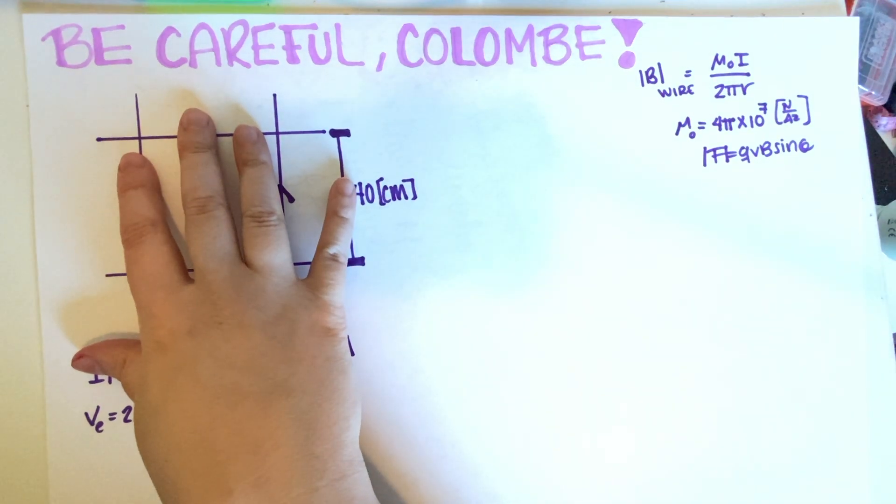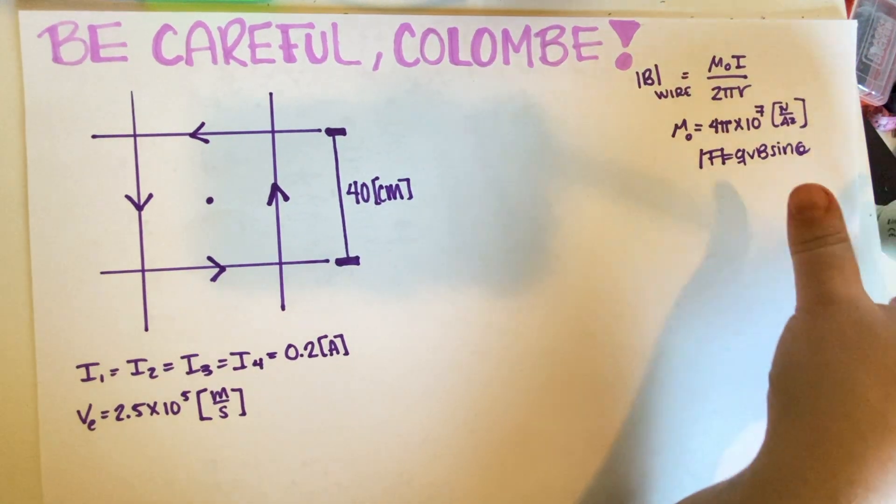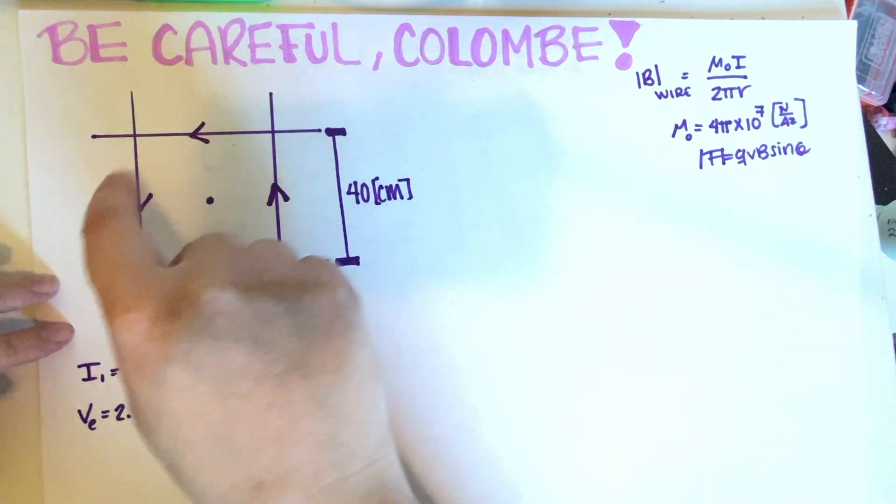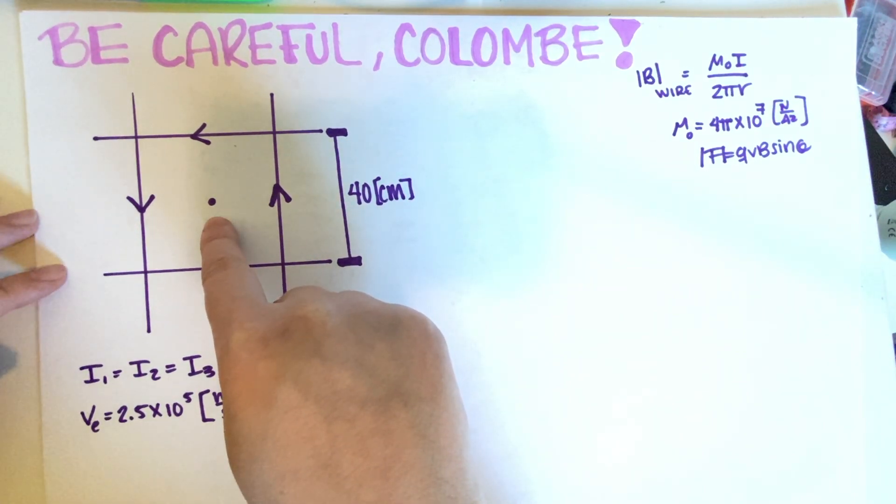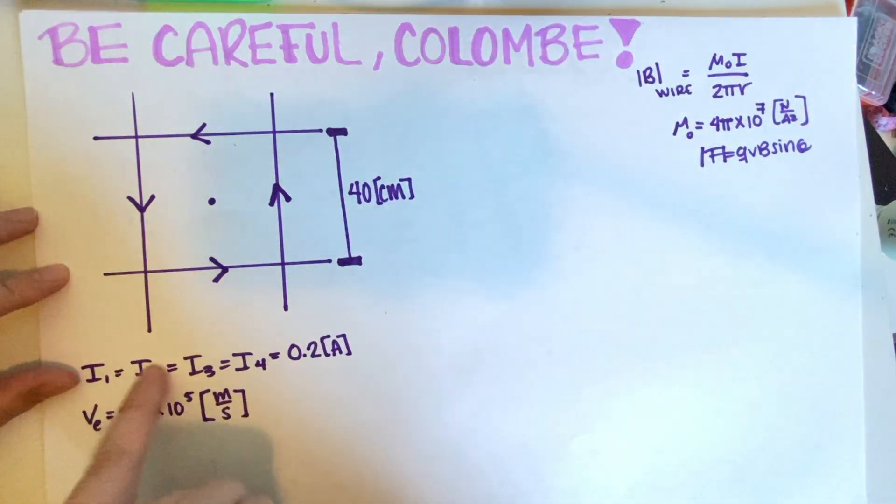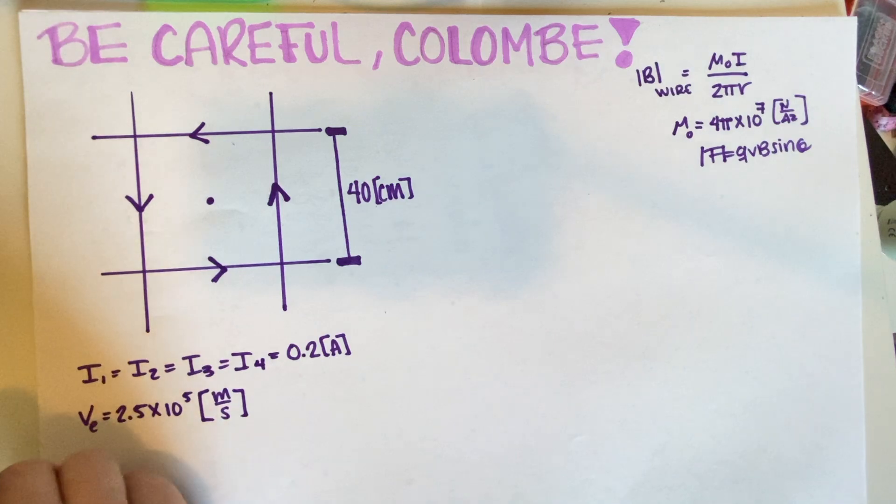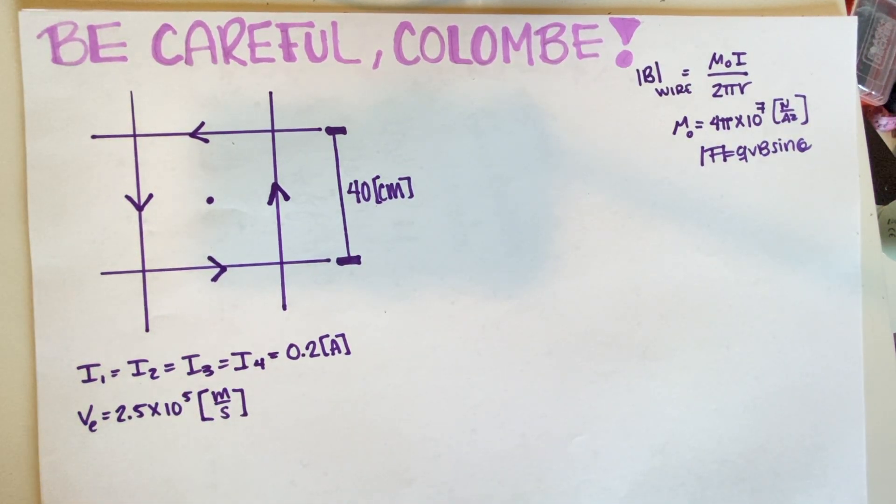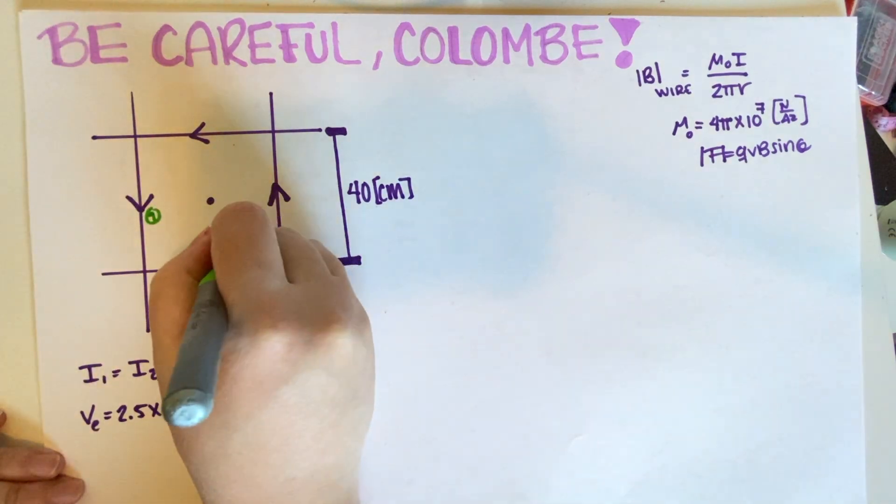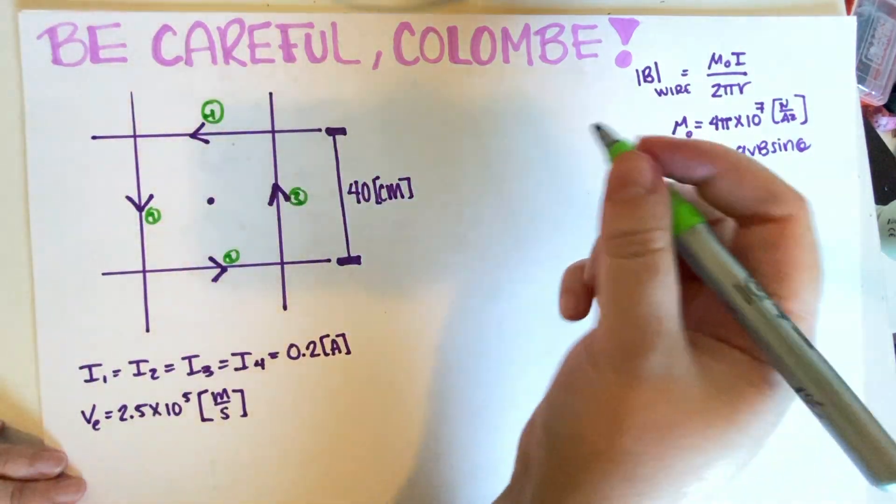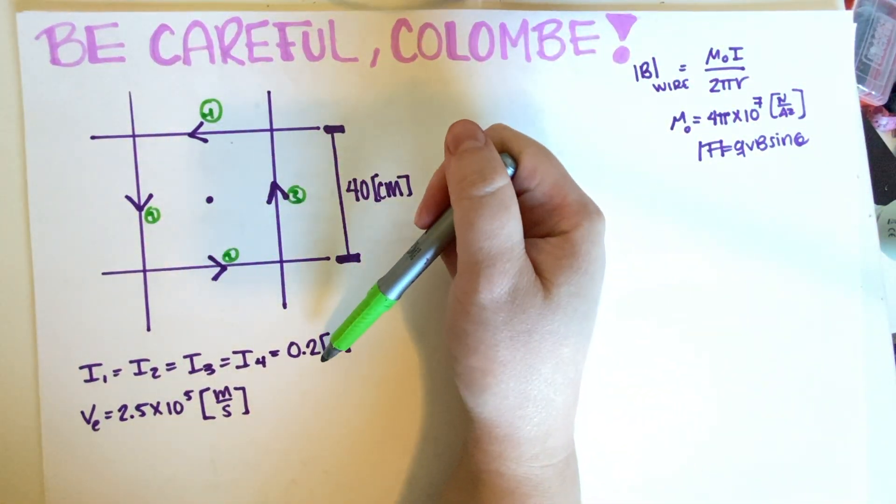So as you can see, I have this sketch over here. And the first thing that we have to do is basically ignore the electron and just figure out, due to each of these wires, what is the magnitude and the direction of the magnetic field at this point. So all of the wires are carrying the same current 0.2 amps. So let's just go ahead and let's say that this is wire one, two, three, and four. It doesn't matter, but let's just name them so that it's easier. And all of them carry 0.2 amps.